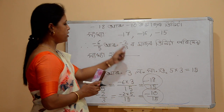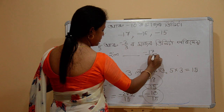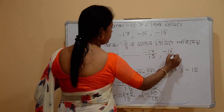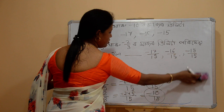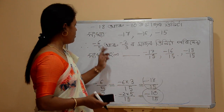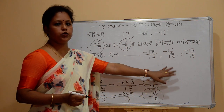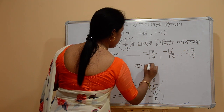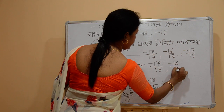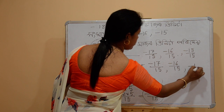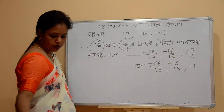Minus 6 by 5 or minus 2 by 3. Whole: minus 17 by 15, minus 16 by 15, and minus 15 by 15. With denominator 15, we get: minus 18 — so minus 6 by 5 and minus 2 by 3 give us minus 17 by 15, minus 16 by 15. Minus 15 by 15 is minus 1. So minus 6 by 5 and minus 2 by 3, and that's it.